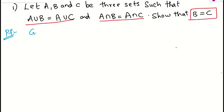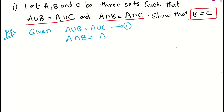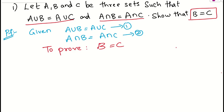Before proving, always try to write the given things. What is given? A union B must be equal to A union C — let us take it as equation number one. And the next thing given: A intersection B is nothing but A intersection C. These are the two given things. So what do we need to prove? We need to prove that B must be equal to C.